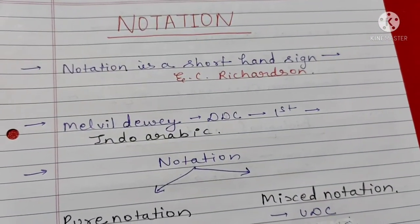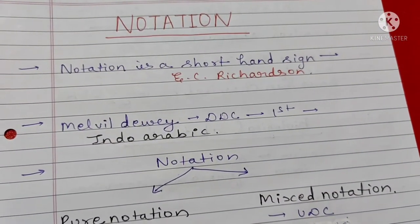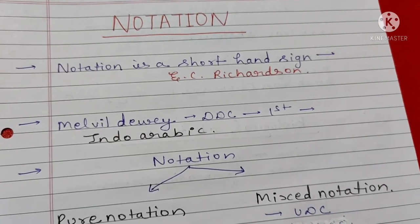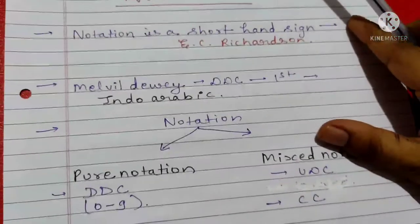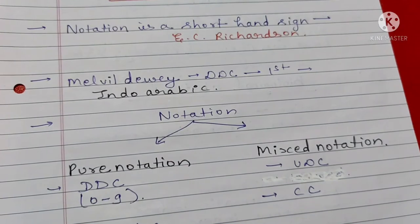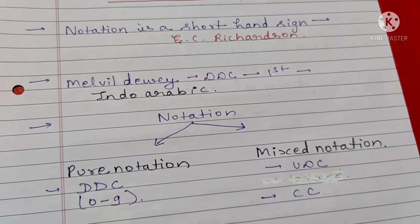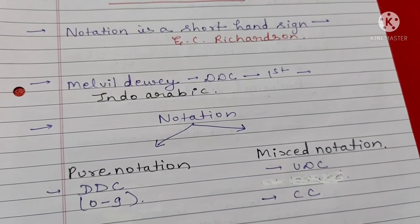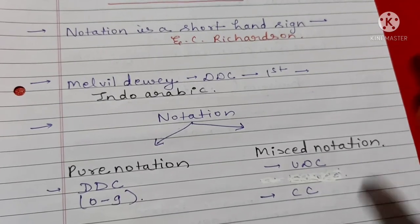Notation is a very short topic, only 3-4 questions. Notation is a shorthand sign. Melvil Dewey used in DDC, which was the first edition, was Indo-Arabic.